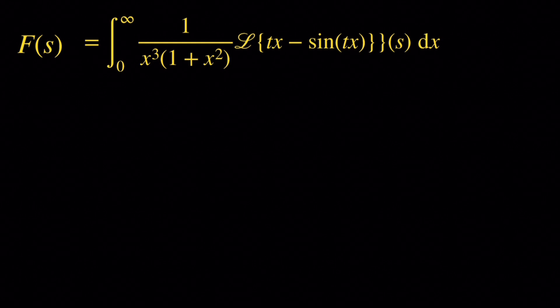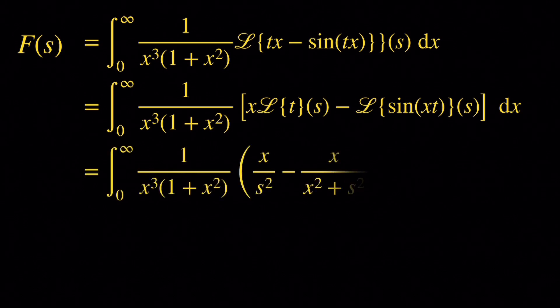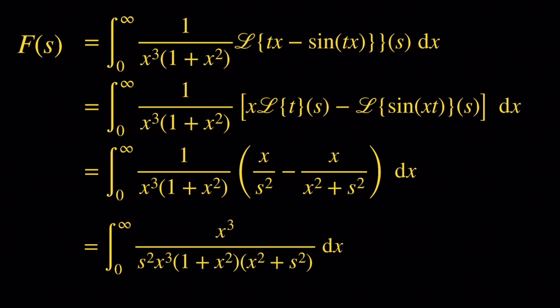Because the Laplace transform is linear, we can write it as x times the Laplace transform of t, minus the Laplace transform of sine of xt, where x is of course a constant. The Laplace transform of t is 1 over s squared. The Laplace transform of sine of at is a over a squared plus s squared, so the Laplace transform of xt is x over x squared plus s squared. Combining everything, we end up with the integral from 0 to infinity of x cubed over s squared times x cubed times 1 plus x squared times x squared plus s squared.